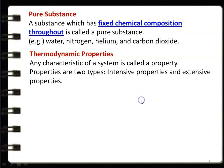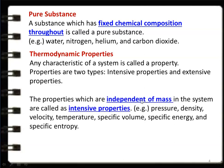Properties are of two types: intensive property and extensive property. Properties which are independent of the mass in the system are called intensive properties. For example, pressure, density, velocity, temperature, specific volume, specific energy, and specific entropy. These are all intensive properties. Specific volume, specific energy, and specific entropy are expressed per unit mass, which is why they are also called independent properties.